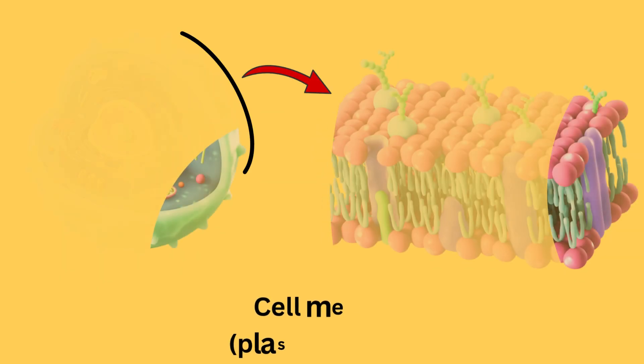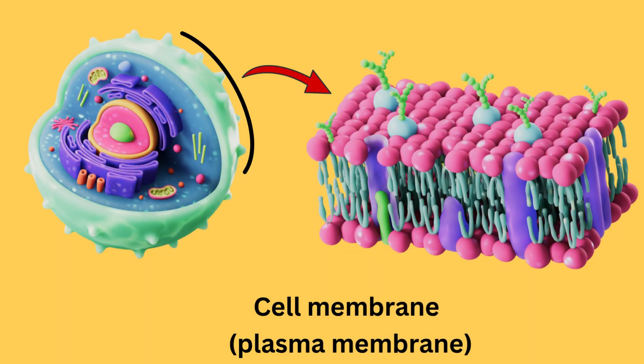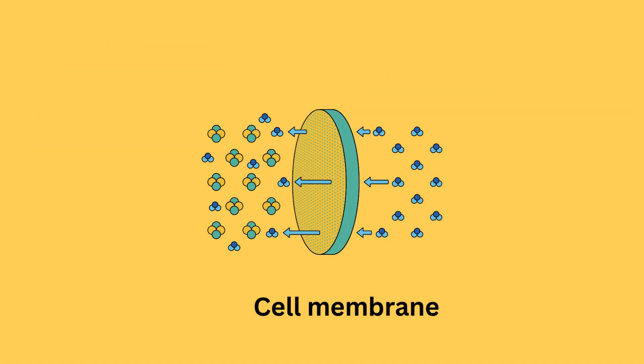This is the cell membrane, also called plasma membrane. It is a thin, flexible layer surrounding the cell. It is made up of a phospholipid bilayer with proteins. It controls the entry and exit of substances, thus maintaining a stable internal environment. Like the security gate of a factory, isn't it?